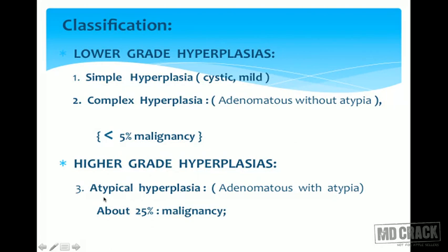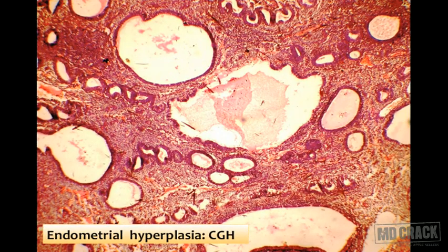High-grade hyperplasia shows nuclear atypia and is called atypical endometrial hyperplasia. These carry a high risk of progression to endometrial carcinoma — around 25 percent of untreated cases can develop carcinoma. Microscopically, simple endometrial hyperplasia shows cystic dilatation of glands, sometimes with mucin accumulation in the lumen, cyst macrophages, and hypercellular stroma, but without nuclear atypia. The old terminology is cystic glandular hyperplasia (CGH); the new term is simple endometrial hyperplasia without nuclear atypia.